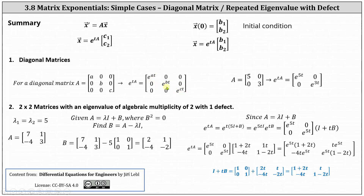Secondly, if we have a two by two matrix that has an eigenvalue of algebraic multiplicity two with defect one, we determine matrix B where B equals A minus lambda I. For the example shown, matrix A has a repeated eigenvalue of five with one defect, and matrix B is the matrix two, one, negative four, negative two. Therefore, e to the power of tA equals e to the power of t times the sum of 5I and B, which because the two matrices commute, we can write as e to the power of 5tI times e to the power of tB. E to the power of tB equals I plus tB, and therefore the matrix exponential is equal to the product of these two two by two matrices.